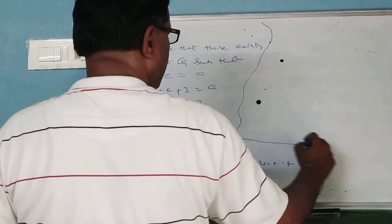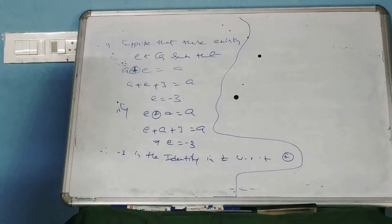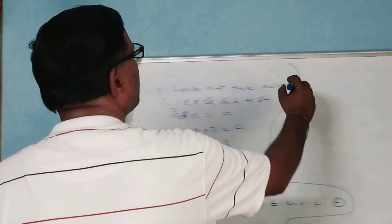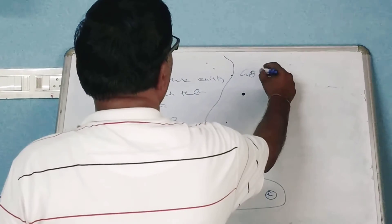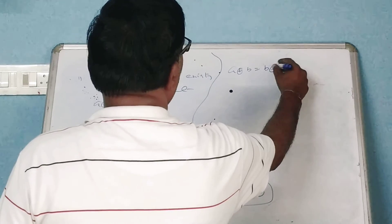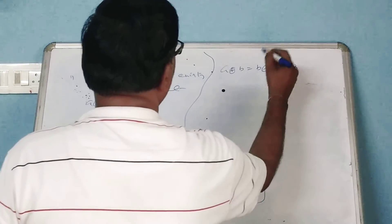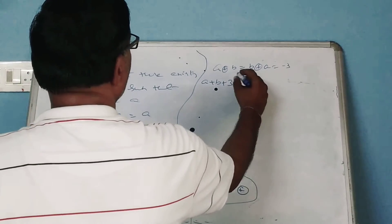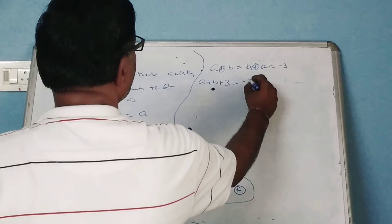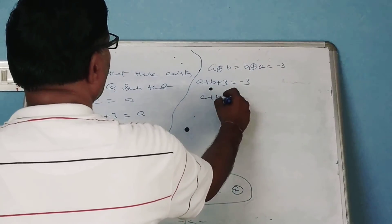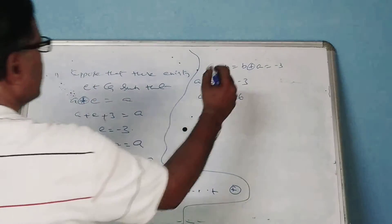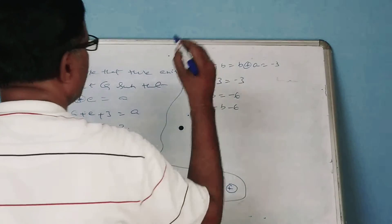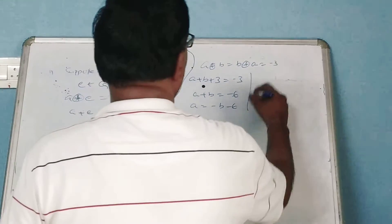Now I would like to calculate the inverse element. Suppose that A circular-plus B is equal to B circular-plus A is equal to minus 3. That means A plus B plus 3 is equal to minus 3, so A plus B is equal to minus 6.